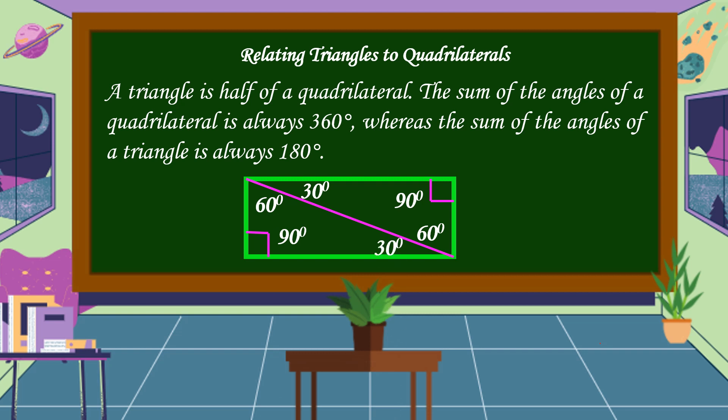This is quadrilateral ABCD. In triangle ABC, their angles are 90 degrees, 60 degrees, and 30 degrees, with a total of 180 degrees.